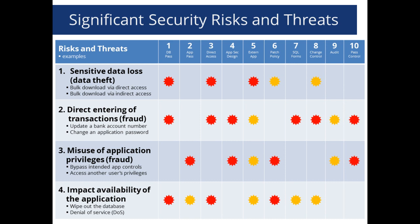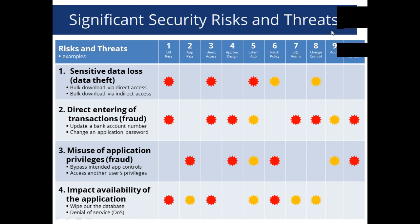There are two ways to steal data: direct access by logging into the database, and indirect access through internet-exposed modules. For example, when you run iSupplier on the internet with Oracle Business Suite, you're effectively running your HR system on the internet. Someone can potentially access that data. Two areas related to data integrity involve fraud — if you can do things in Oracle Business Suite you're not supposed to, you can circumvent application controls.